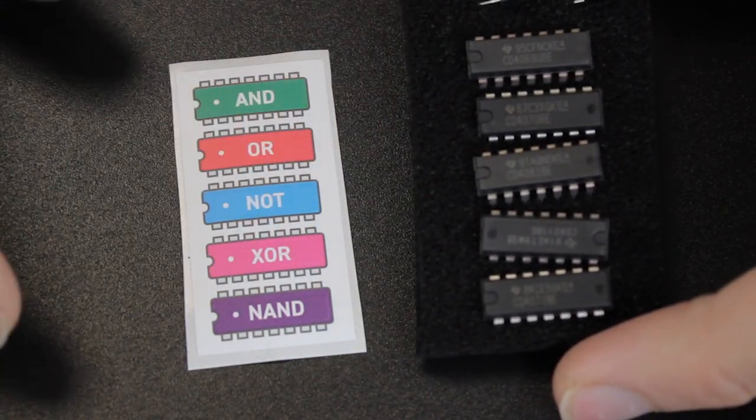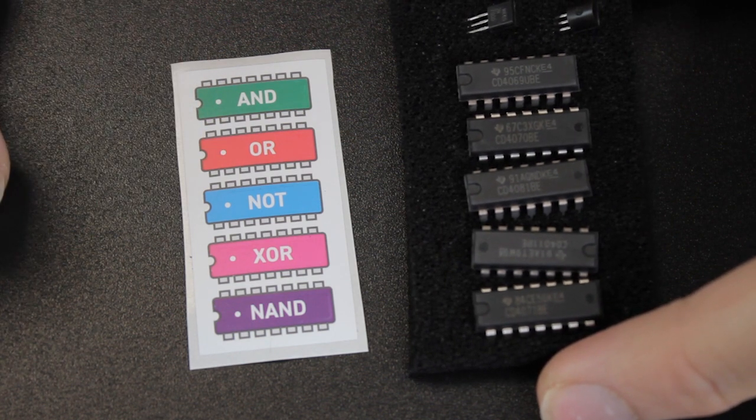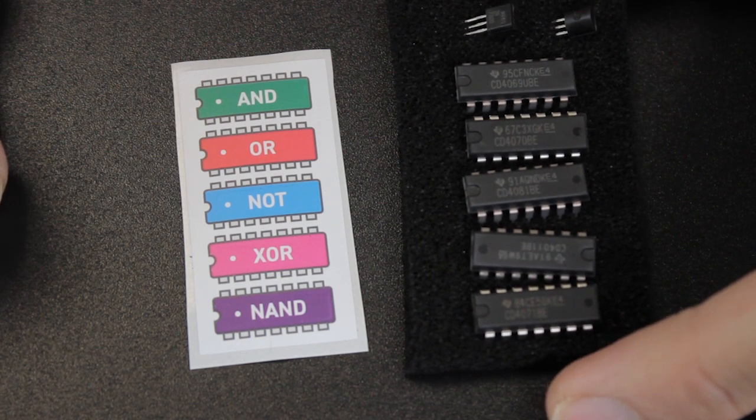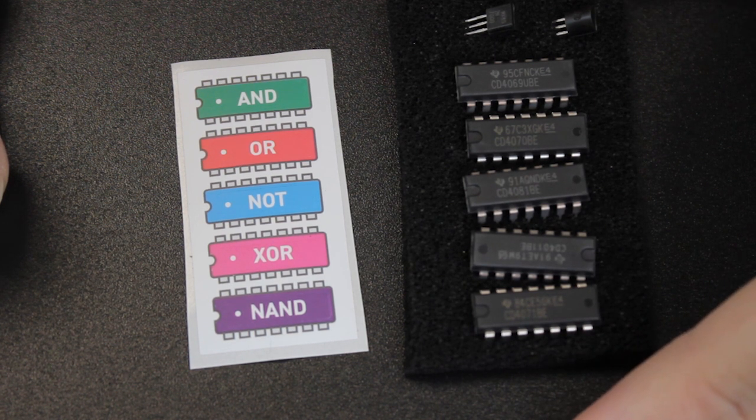Each of the Digital Logic chips comes with a corresponding colour-coded sticker. These colour codes are then used throughout the instruction booklet to make it really easy to tell which logic chip you need for which experiment.